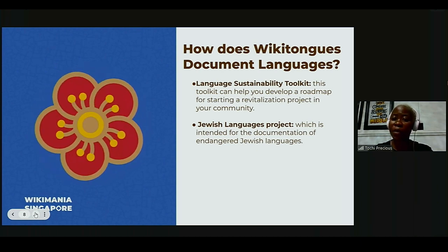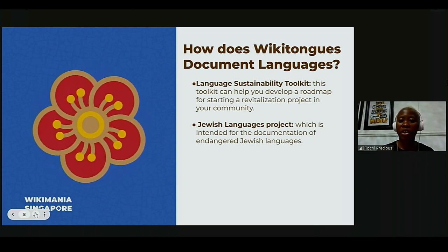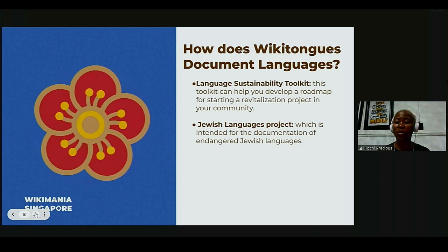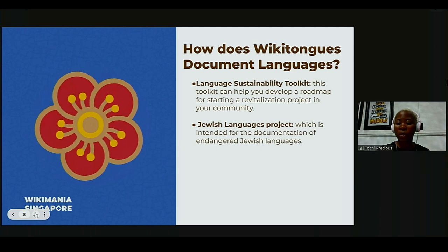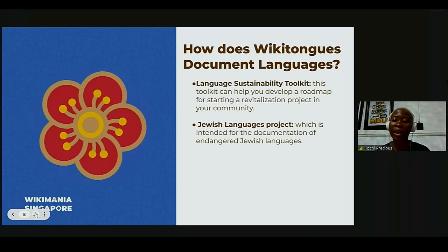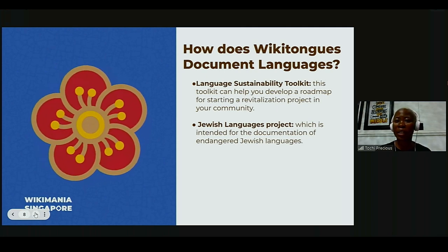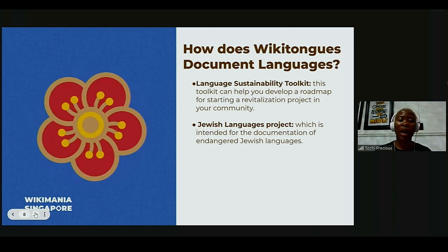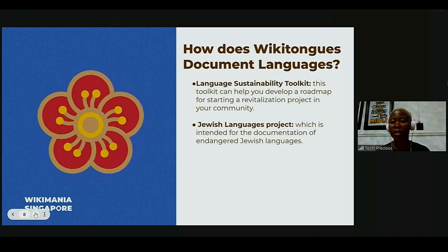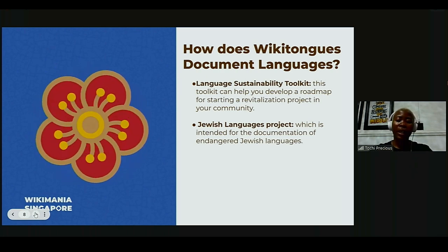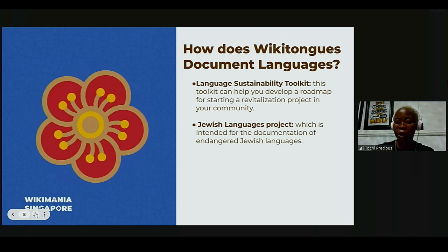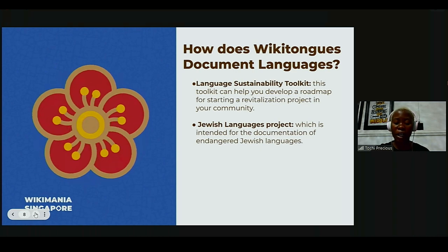There's also the Language Sustainability Toolkit. If you're a Wikimedian whose community has an endangered language, this toolkit helps you develop a plan and goals for starting a revitalization project for your community. For now it's still in English, but we're working on getting as many translations as possible. Wikithongs projects are not restricted to English — we have speakers of other languages and access to translators and translation tools. There's also the Jewish Languages Project, intended for the documentation of endangered Jewish languages, which Wikithongs is working to revitalize and document.